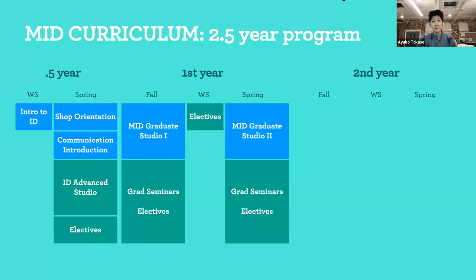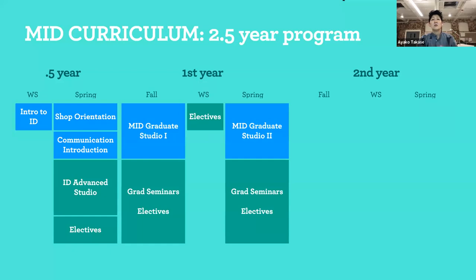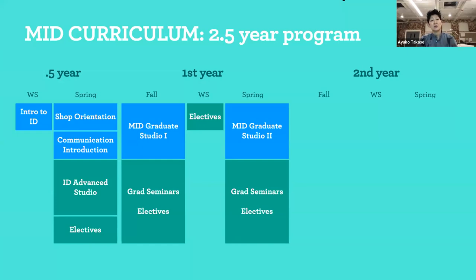For the 2.5-year program, when you arrive in the winter session, you take Introduction to Industrial Design — a rapid, concentrated foundation. For those without a design background, it's like a boot camp to get up to speed. In the spring, you have shop orientation to learn the tools and equipment, a communication introduction course on visualizing and communicating design ideas, and you're thrown into an advanced studio mixed with juniors and seniors to learn critique culture, how design studios run, and how to study, model, and draw. Then you take one elective.